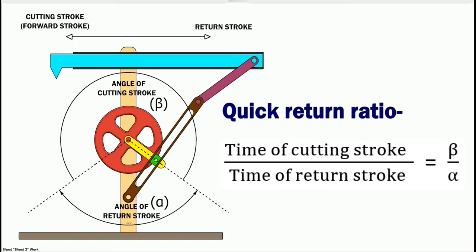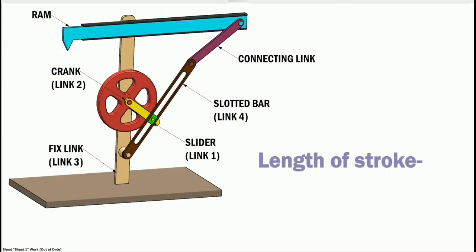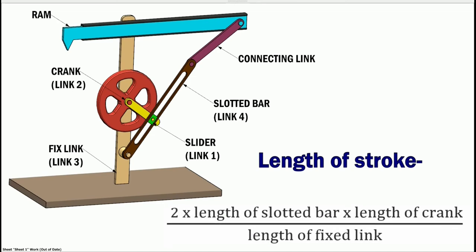Quick return ratio is time of cutting stroke upon time of return stroke, equal to beta upon alpha. And we can find length of stroke by this formula: 2 into length of slotted bar, into length of crank, upon length of fixed link.